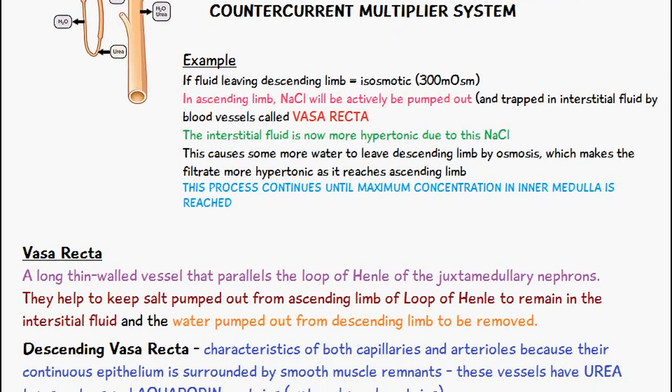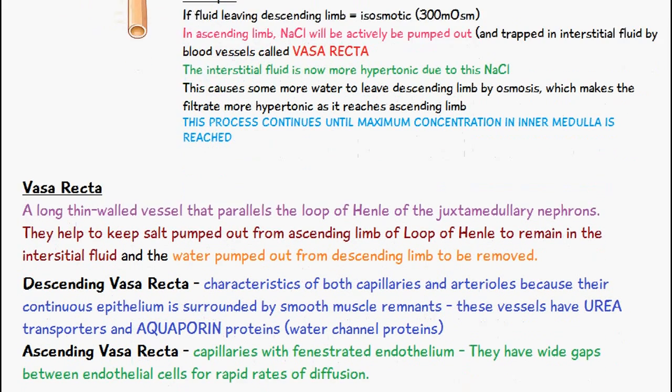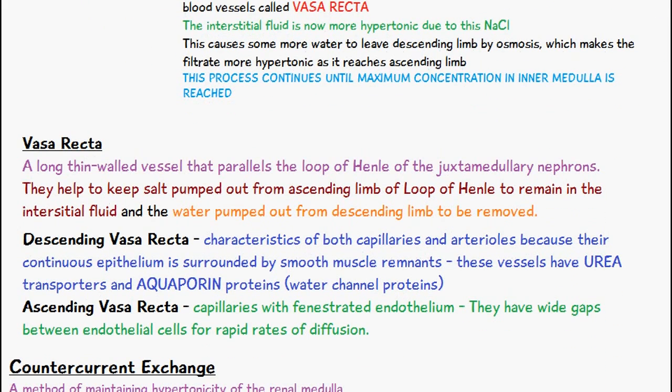We have the descending vasa recta, which has the characteristics of both capillaries and arterioles because it has a continuous epithelium surrounded by smooth muscle remnants. These vessels also have urea transporters and aquaporin proteins, also known as water channel proteins.